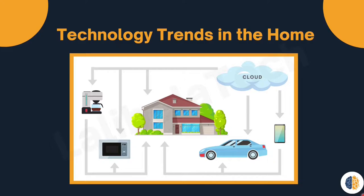Now we will discuss technology trends in home networking. These trends are not only affecting the way we communicate at work or in school, but also changing many aspects of our homes. The newest home trend is smart home technology, which integrates everyday appliances that can connect with other devices to make them more smart or automated. As you can see in this picture, the phone, the car, the smart oven, and the smart coffee maker are all connected to the cloud and to the home.